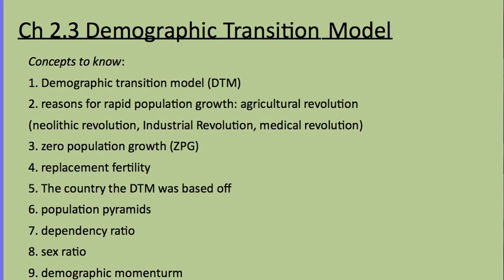The key concepts to know are the demographic transition model, reasons for rapid growth including the agricultural revolution (also called the Neolithic Revolution), the industrial revolution, and the medical revolution. You should also understand zero population growth, replacement fertility, the country the DTM was based on, population pyramids, the dependency ratio, sex ratio as it relates to population pyramids, and what demographic momentum is.